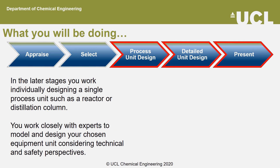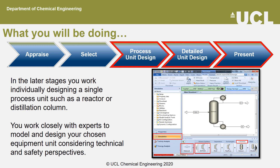In the later stages of the design project, you work as an individual designing a single process unit such as a reactor or distillation column. In the process unit design stage, you work closely with experts to develop technically feasible designs and develop a computational model of your unit. Here is a screenshot of online support material provided on how to simulate a distillation column using the process modeling software Aspen Plus.